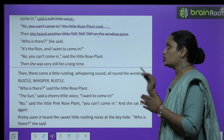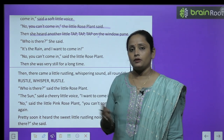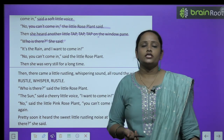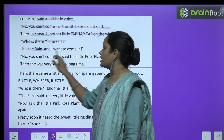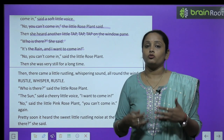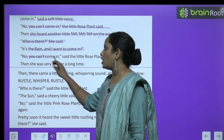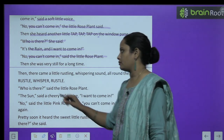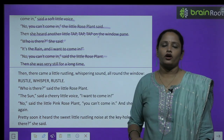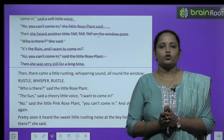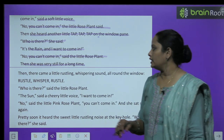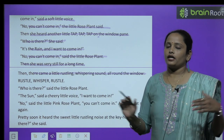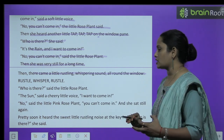Then she heard another little tap tap tap on the window pane — वो आवाज़ खिड़की पे भी आने लगी, वही tap tap tap की आवाज़। The rose plant again asked 'Who is there?' 'It is the rain and I want to come in.' Again the little rose plant said no, and she was very still for a long time. Then there came a little rustling whispering sound all around the window.